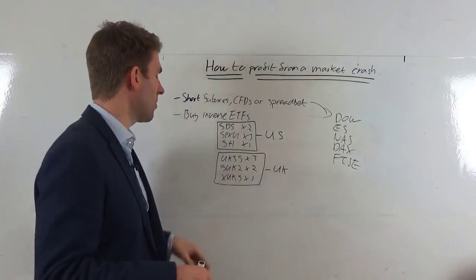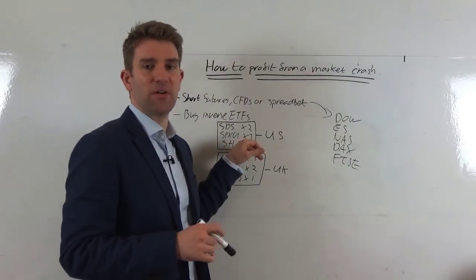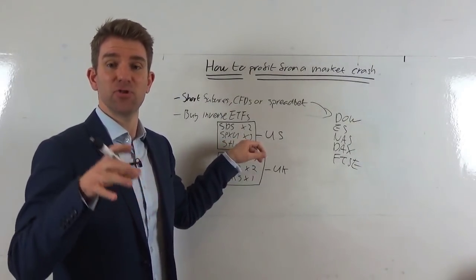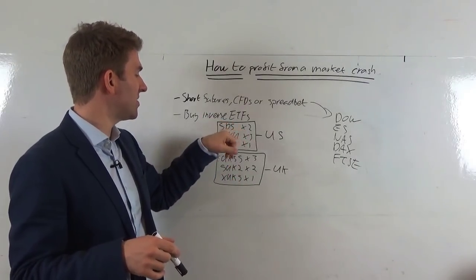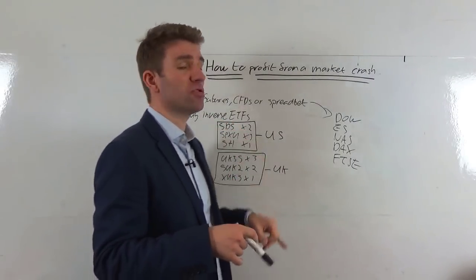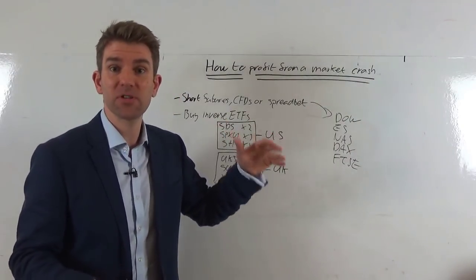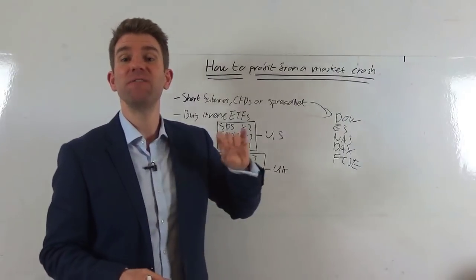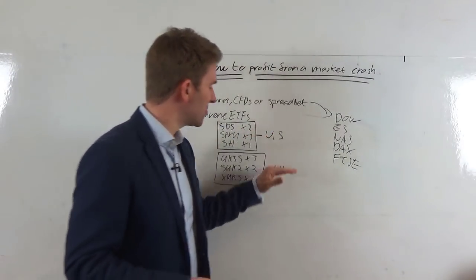So what have we got here in the US? If you want to fade the US moves, we've got SH which is S&P 500 inverse ETF, just a single leverage ETF. The double is SDS and the triple is SPXU. So the triple is the biggest bang for your buck. If the S&P 500 dropped five percent in a day, that thing would rocket 15 percent. So if you bought that, that's how much you make on that one.